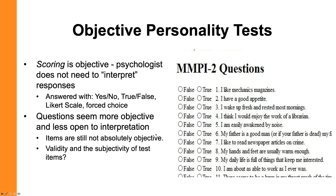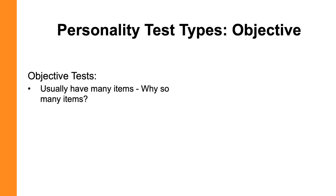Here are some examples of items you might find on an objective test — you know these are objective because the response choices are simply true or false. Something interesting about objective tests is that they usually have a lot of items. If you have an omnibus or multi-dimensional personality test like the NEO PI-3, which measures the five factors, you'll have a lot of items because you're measuring five different traits — the NEO has something like 180 items. Another test with many items is the MMPI or MMPI-2, with 567 true/false questions. That takes a long time to finish.